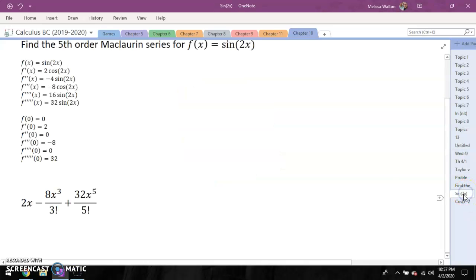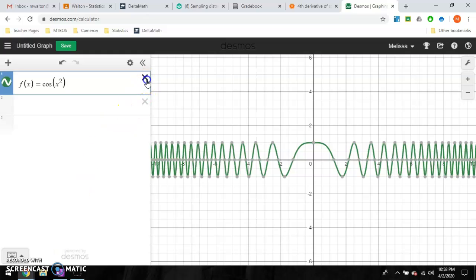All right, first question. Here is what I ended up with. So I started taking my derivatives, being very careful to make sure I remembered my chain rule. The derivative of my interior was repeatedly times two. So going through this, here's what I ended up with, evaluated at x equals zero. My first derivative is two, my third derivative was negative eight, and finally, my fifth derivative was 32. And looking at this, I have 2x minus 8x cubed over three factorial plus 32x to the fifth over five factorial.